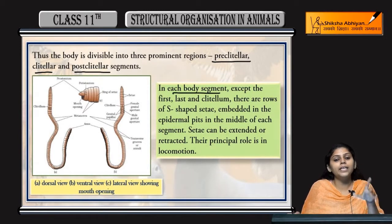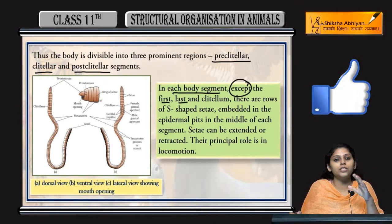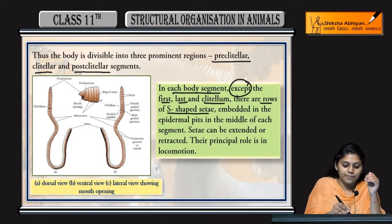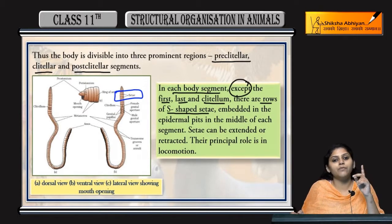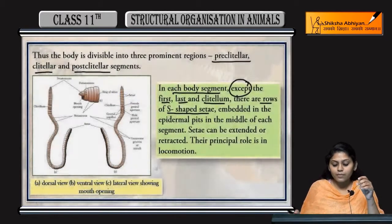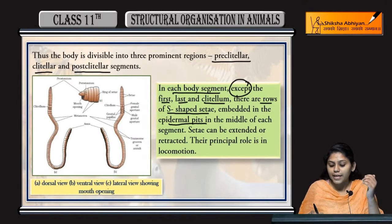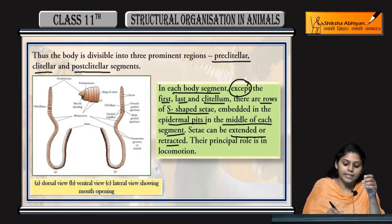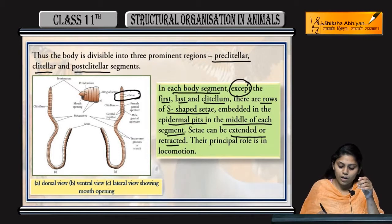In each body segment, except the first, last, and clitellar segments, jo bhi setae hain wo S-shaped setae form karte hain. These setae are embedded in epidermal pits, her segment ke middle mein. Setae can be extended or retracted. Principal role kya hai in setae ka? These setae are helpful in locomotion.